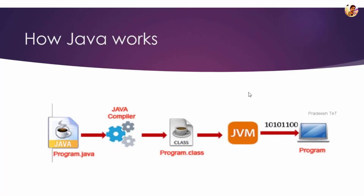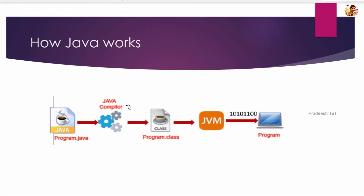So how do we run it? We have our first program dot java file. We write Java code, and the Java compiler converts it into a class file. The class file is machine language — we convert the Java source into machine language.